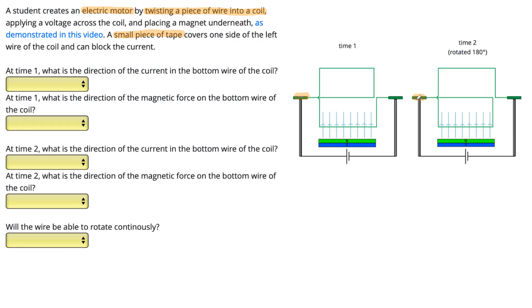However, at time two when it's rotated upside down, the tape is underneath and it's actually blocking the current from traveling from the wire of the coil through to the wire down here.